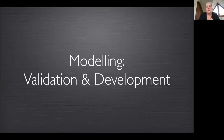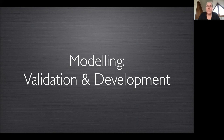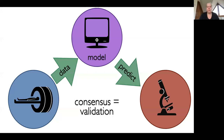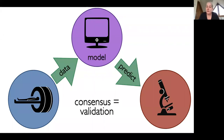Beyond classic correlation approaches, there are more difficult but more rigorous ways to use this data. Rather than just asking whether two things correlate, we're trying to build consensus — passing MR data through a model to predict microscopy, or vice versa. We set a more stringent task: it's not good enough to find that the two types of data correlate; we want one to predict the other via a model we can rigorously defend.